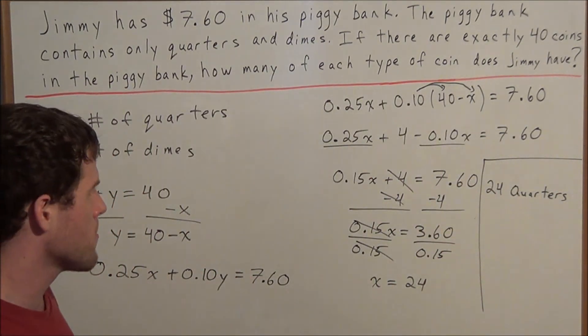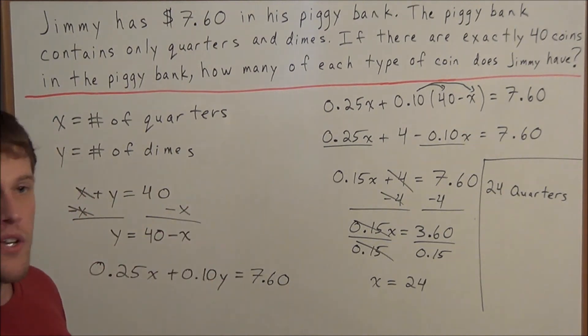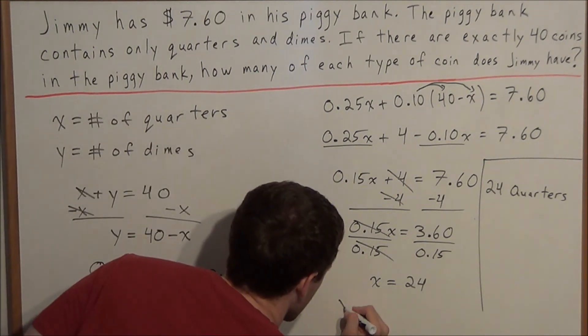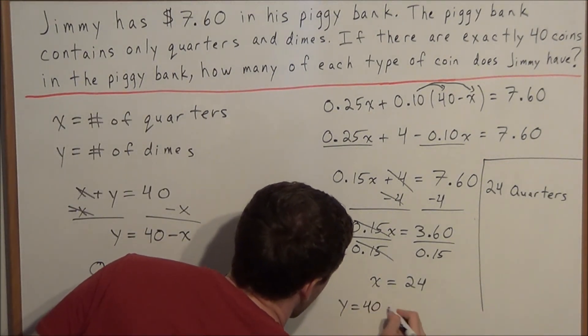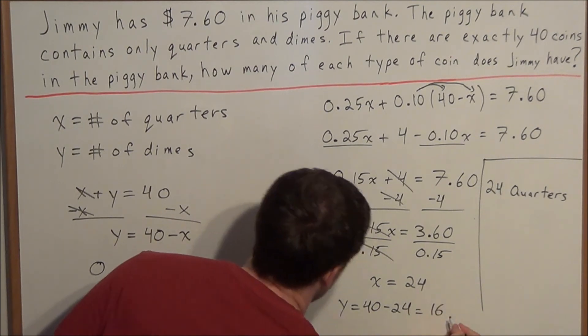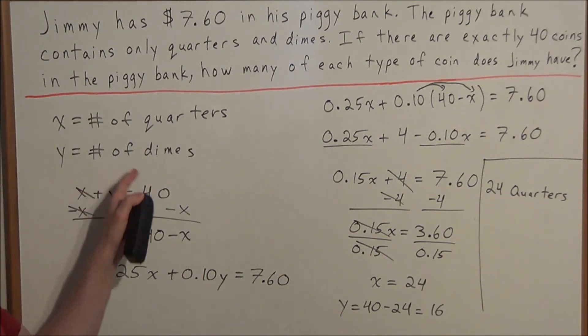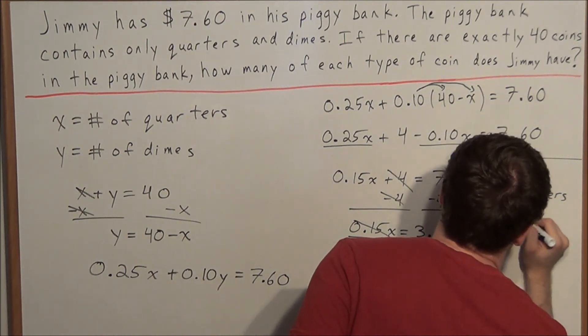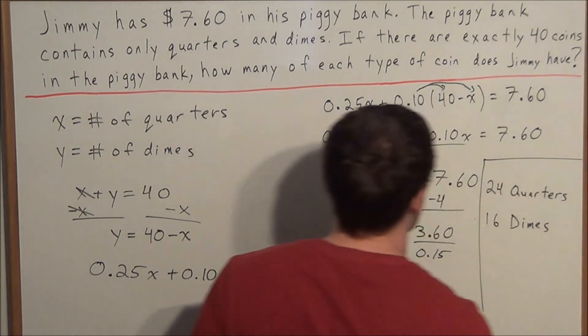And now to find the number of dimes, remember, there are 40 coins in his piggy bank. So we could use this second equation that we found. We have y equals 40 minus x. So we have y equals 40 minus 24, which is equal to 16. And remember, y is the number of dimes, so there are 16 dimes in Jimmy's piggy bank.